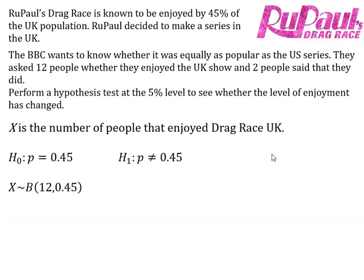Now let's write out our working. We write down a random variable, then our hypotheses. The null hypothesis is that p equals 0.45 - nothing has changed. The alternative hypothesis is that p is not equal to 0.45, because we don't know whether it's increased or decreased, just that it's changed. Assuming the null hypothesis is true, we write down the distribution of X.